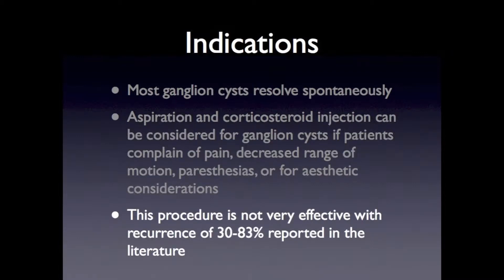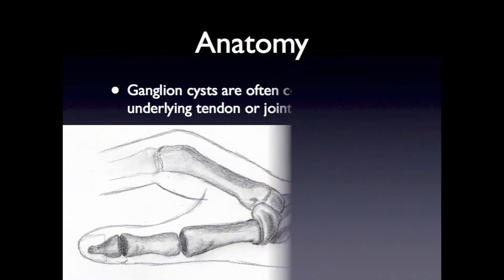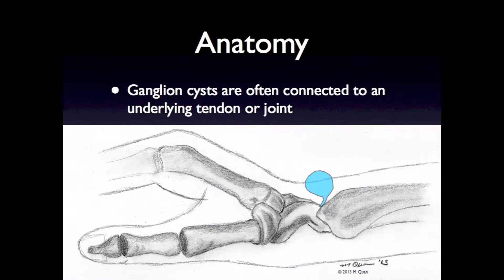This procedure is not very effective, with a recurrence rate of 30 to 83 percent reported in the literature. This is probably due to the fact that after aspirating the contents of the cyst, the cyst wall and direct communication with the underlying joint or tendon remains.